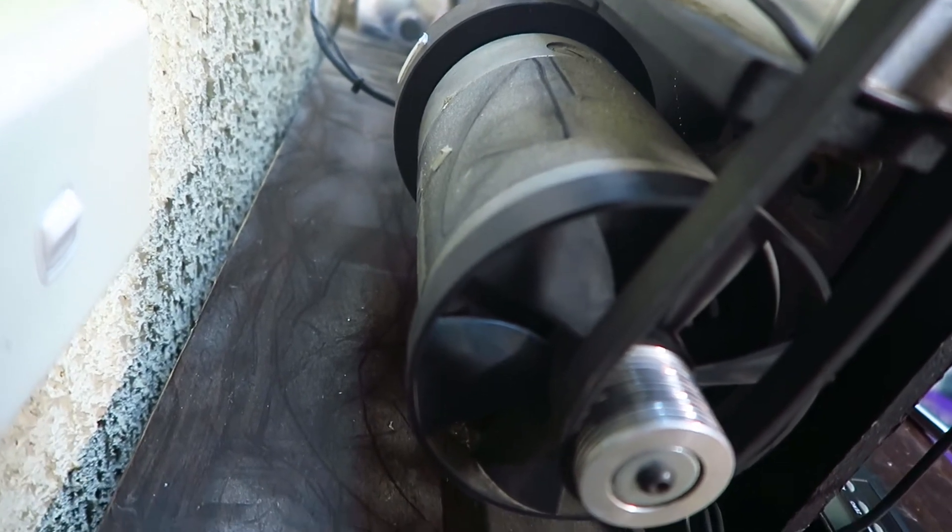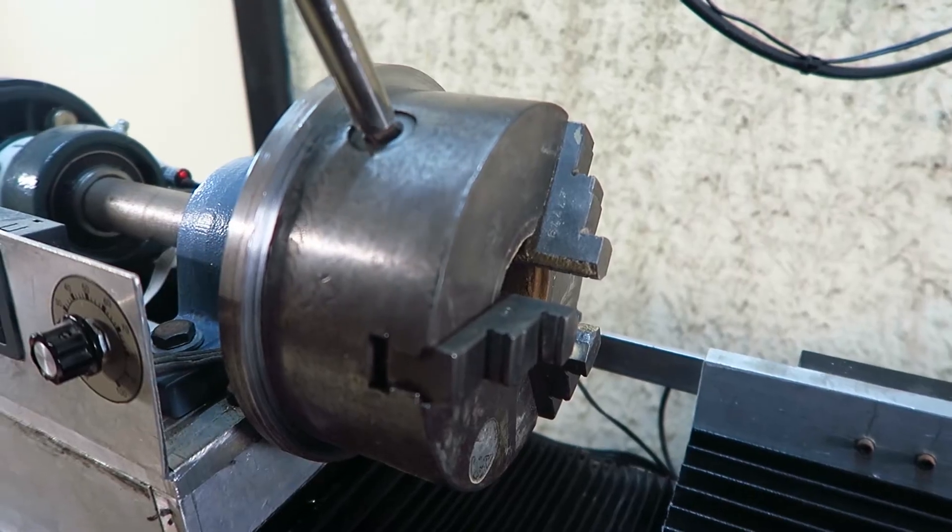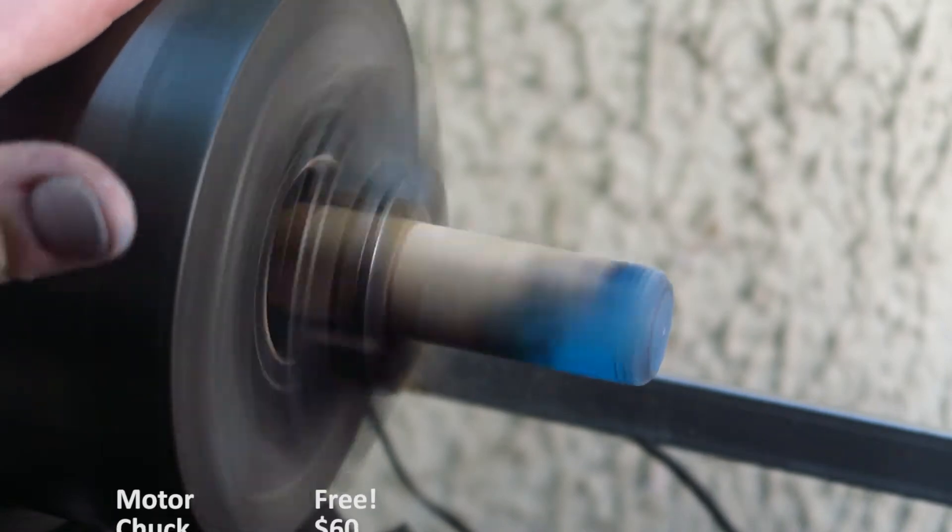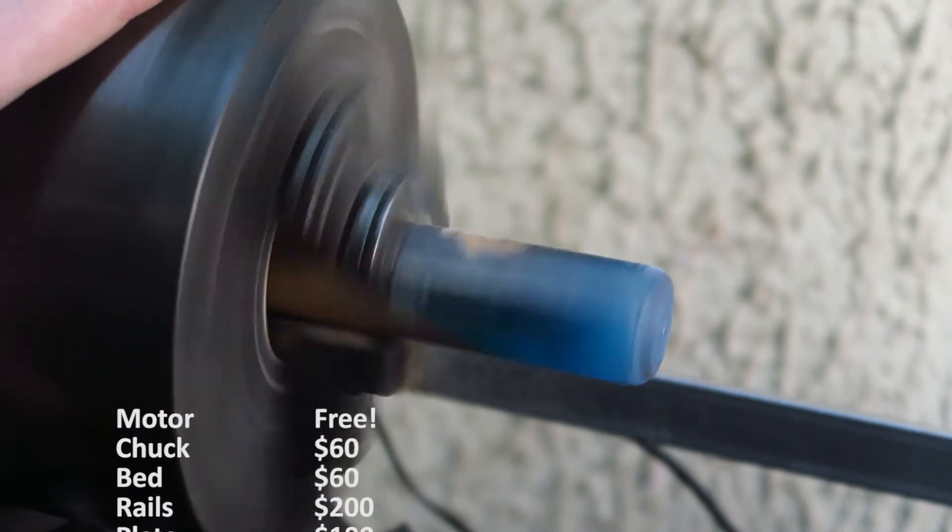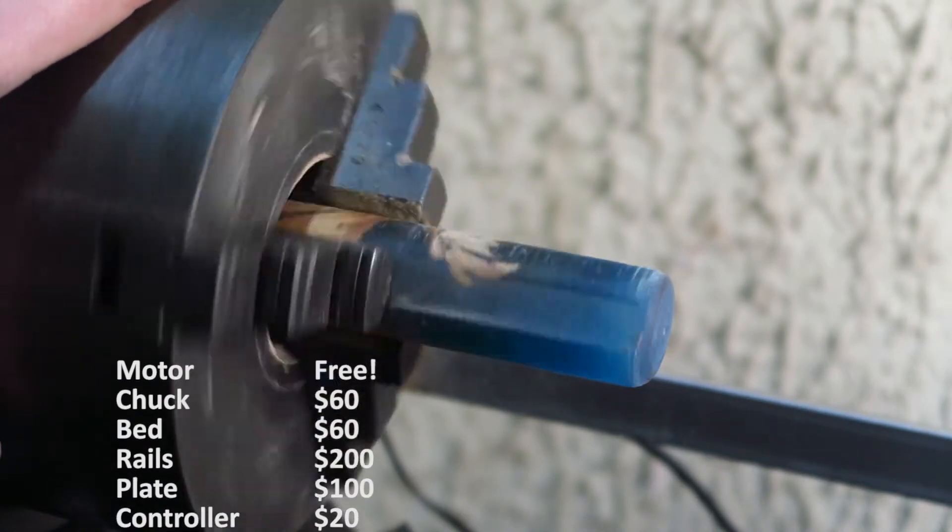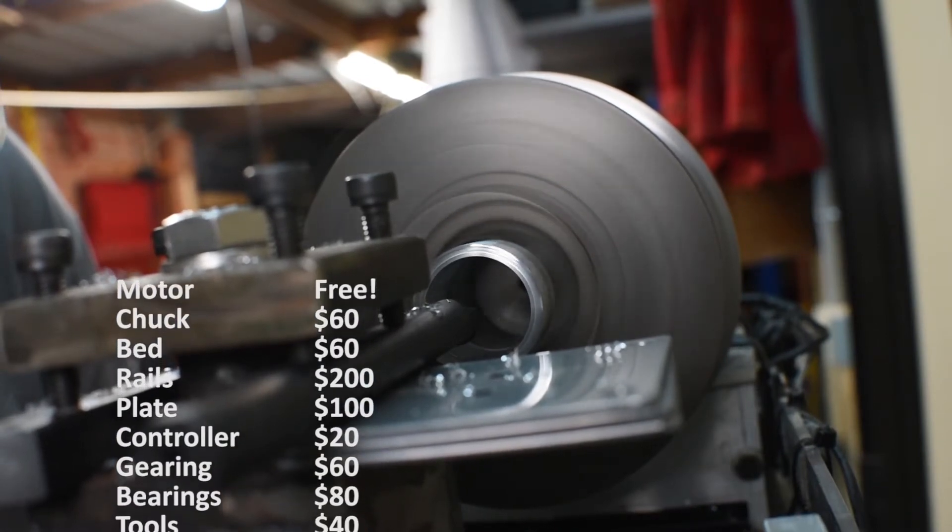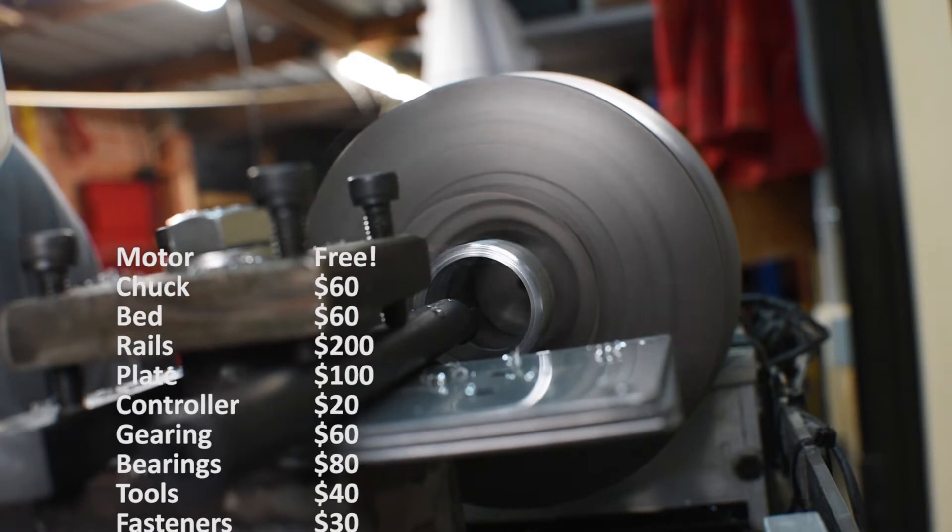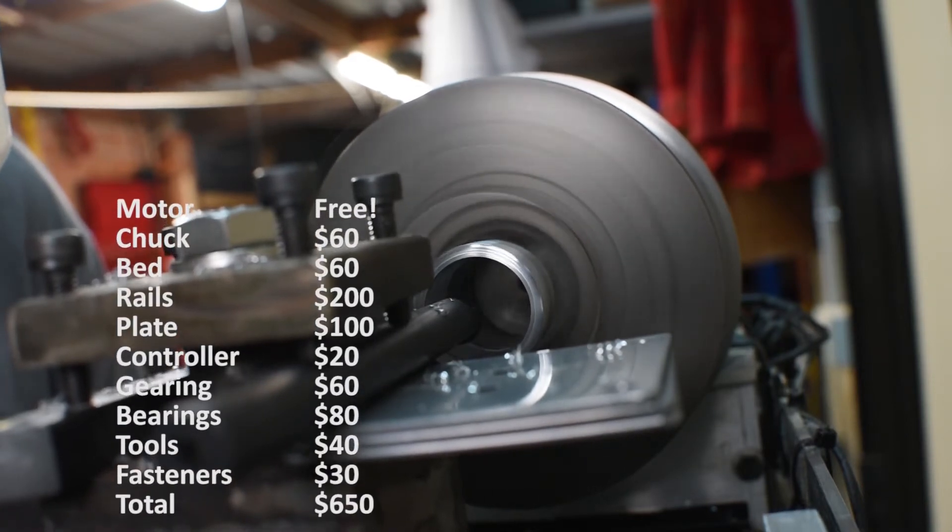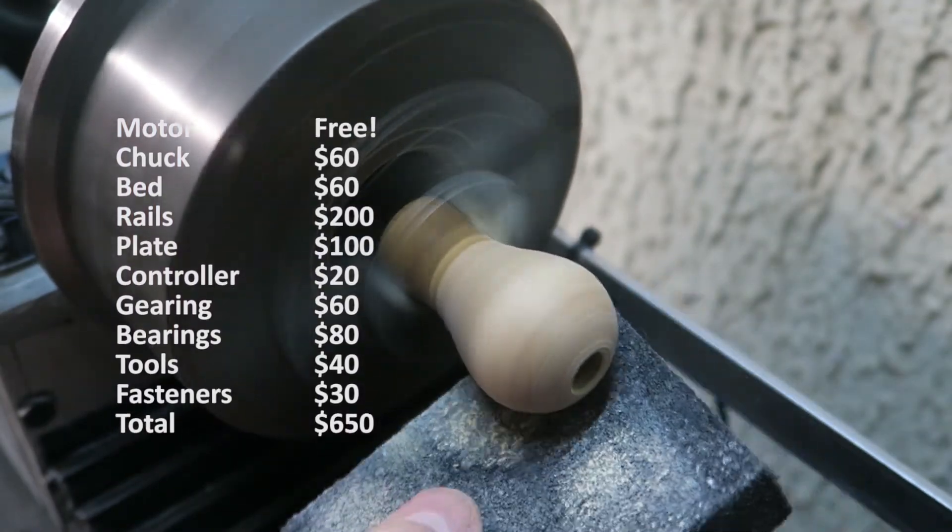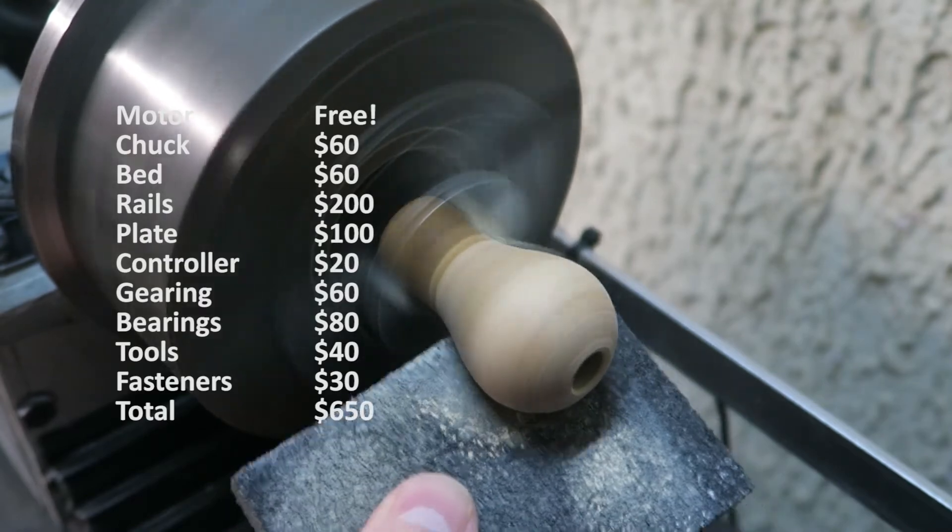In regards to cost, it's a fair sum. So the motor was free. The chuck was about $60. The bed was about $60 in materials. The rails were about $200. All the plate was about another $100. The controller was about $20. All the gearing equipment was about $60. Bearings $80 second time around. All the tooling about $40 and some fasteners, say $30. So that comes to a grand sum of about $650. $500 would buy me a new cheap lathe or a quality used unit.